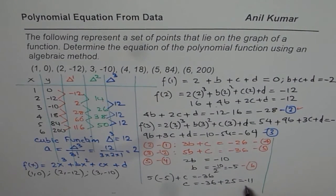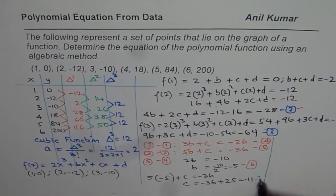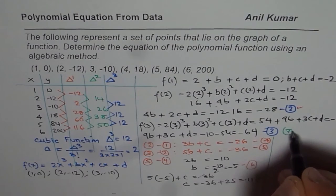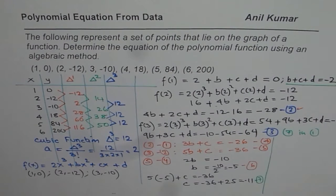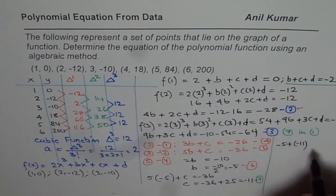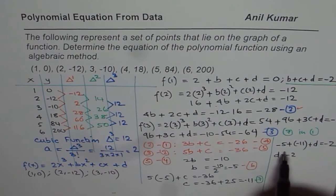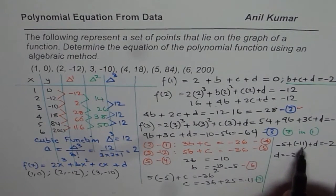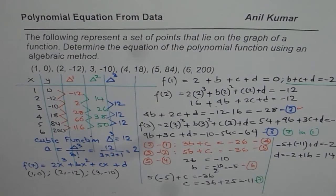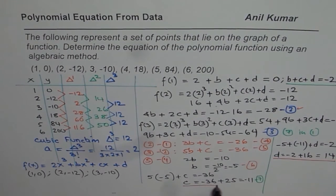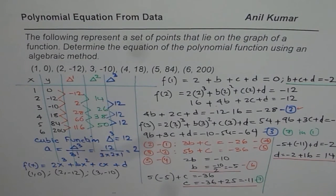Now we find d using equation 1: b + c + d = -2. Substituting b = -5 and c = -11: -5 + (-11) + d = -2, so -16 + d = -2, giving d = -2 + 16 = 14. So d = 14, c = -11, b = -5.